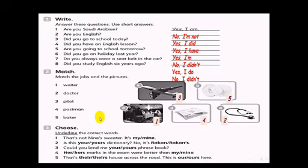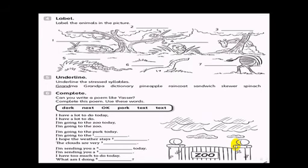Choose. Underline the correct words. Number one. That's not Nina's sweater. It's mine. Yes. Is this your dictionary? No, it's Rakan or Rakan's. The answers. Your, followed by dictionary. And Rakan's. Could you lend me your phrase book. Here. Here's marks in the exam were better than my or mine. Here's and mine. That's there. There's house across the road. This is our hours here. There and hours.